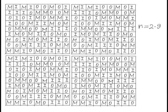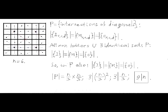This proves that for any N divisible by 9, it's possible to construct a table that satisfies the requirements of this problem. Let's try to prove the hypothesis that divisibility by 9 is not only sufficient, but a necessary condition for N. This diagram shows a grid with 36 cells. Let's assume it contains letters I, M, and O such that each row, each column, and each diagonal whose length is divisible by 3 has equal numbers of letters I, M, and O.